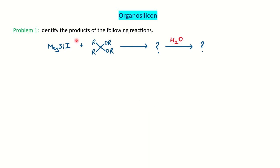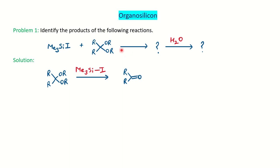Our very first question is: identify the product of the following reaction. We have here a trialkyl-silyl iodide reagent along with an acetal, and there are two products — they are asking for the intermediate, and then in the presence of water you have to find out what could be the product. If you are familiar with organo-silicon reagents and their application, you can easily go ahead with the mechanism. Basically, the acetal, where the carbon is having two ether groups, in the presence of trialkyl-silyl iodide forms the carbonyl compound — it is the deprotection reaction. Trialkyl-silyl reagent is a very important reagent for deprotection and protection.